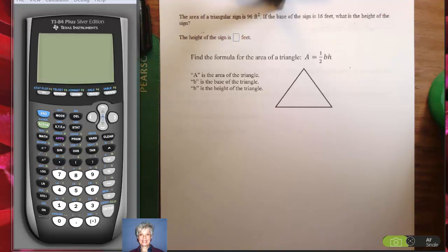We're still doing word problems, but these are formula word problems. The area of a triangular sign is 96 square feet. If the base of the sign is 16 feet, what is the height? Well, you're going to have to find or remember the formula for a triangle, and I wrote it right here.